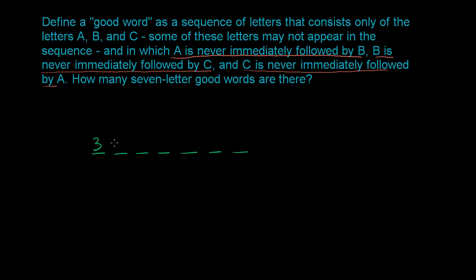Now, no matter what that first letter is, how many possibilities are there for the second letter? Well, if it was an A, the second letter could only be an A or a C, because it can't be followed by a B. If it was a B, the second letter could only be a B or an A, because it can't be followed by a C. If it was a C, the second letter could only be a B or a C. So no matter what the first letter is, the second letter can only have two possibilities — one letter is always ruled out.